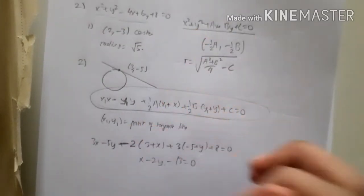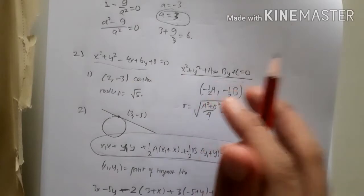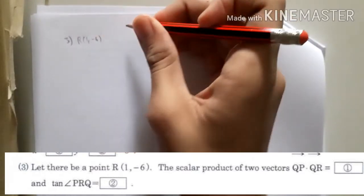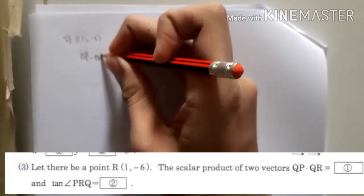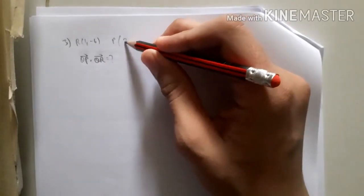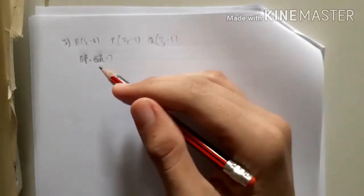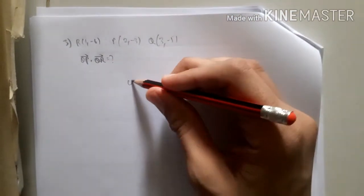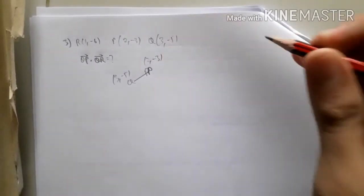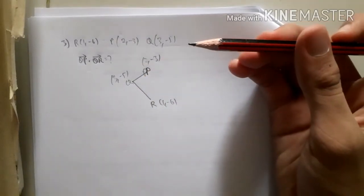For number three, there is a point R(1, -6). We need to find the scalar product of vectors QP and QR. P is the center of the circle, which we found to be (2, -3). Q is the tangent point (3, -5). We connect these points to form vectors QP and QR, where R is (1, -6).